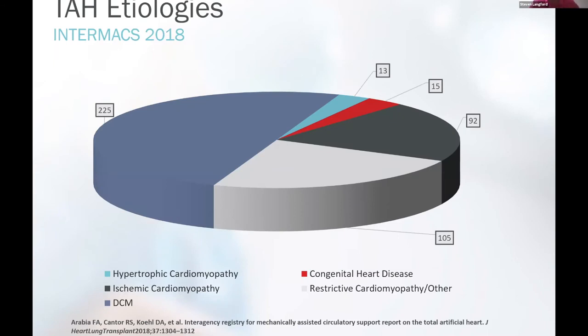TAH etiologies from the Intermax publication: the lion's share of patients in this publication had dilated cardiomyopathy. Then drifting down, it goes to restrictives, and then ischemics.